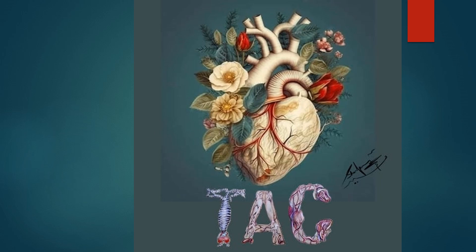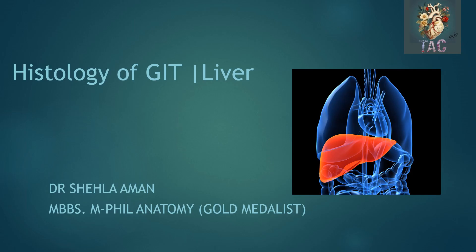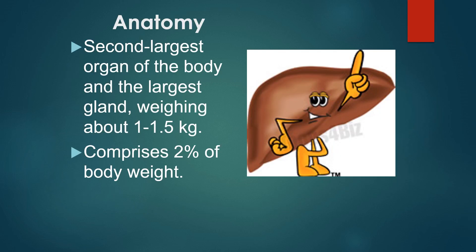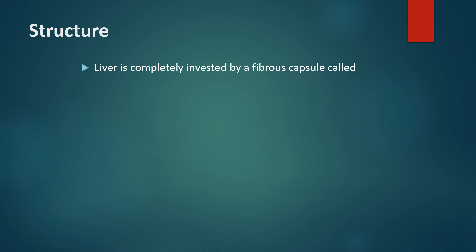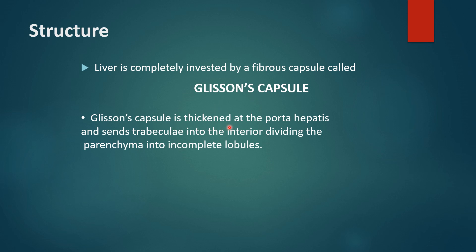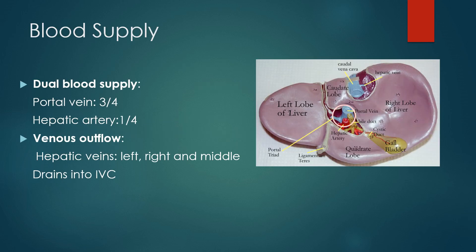Bismillahirrahmanirrahim. Assalamu alaikum dear students, welcome to your channel The Anatomy Canvas. In today's class we are going to discuss the histology of the liver. A little bit about its anatomy: it is the second largest organ of the body and largest gland, weighing about 1 to 1.5 kg, comprising 20% of the body weight. The liver is completely invested by a fibrous tissue capsule called Glisson's capsule, which is thickened at the porta hepatis and sends trabeculae into the interior dividing the parenchyma into incomplete lobules.